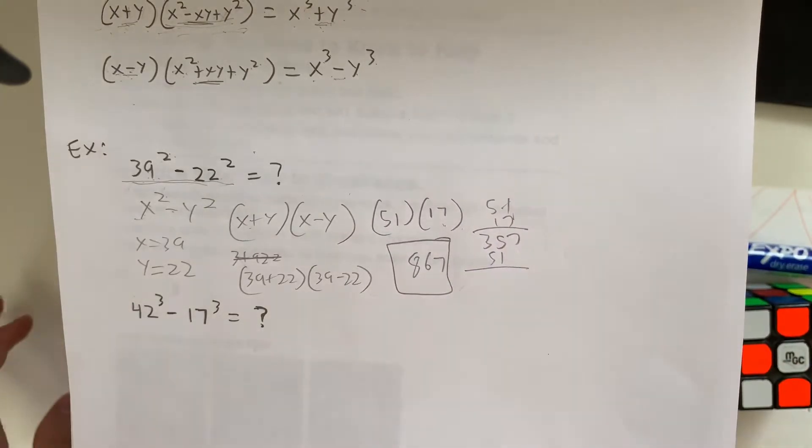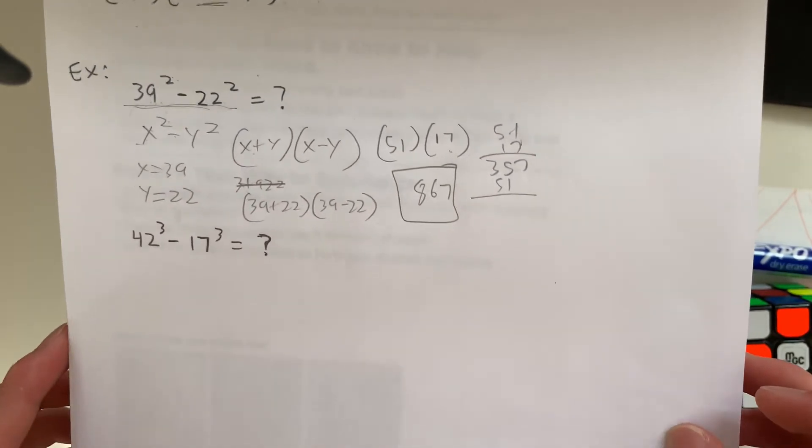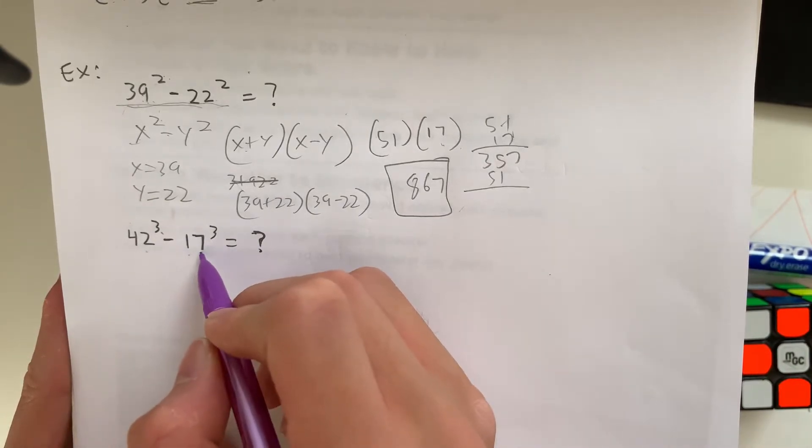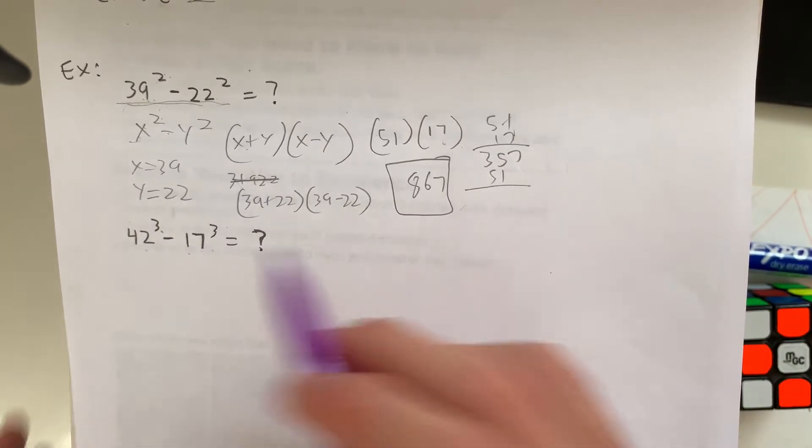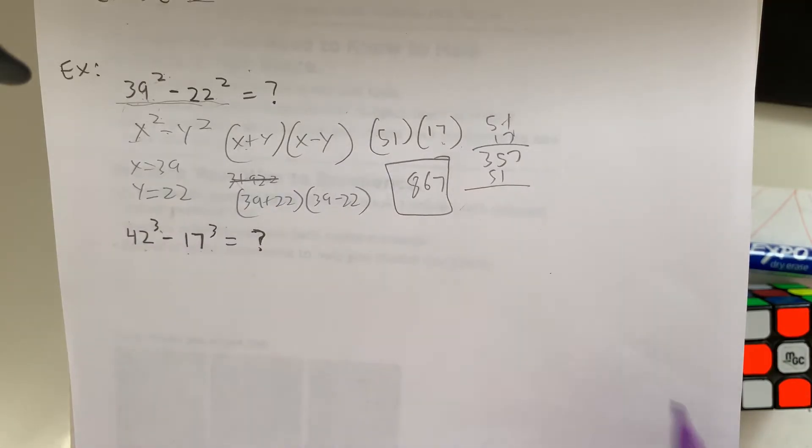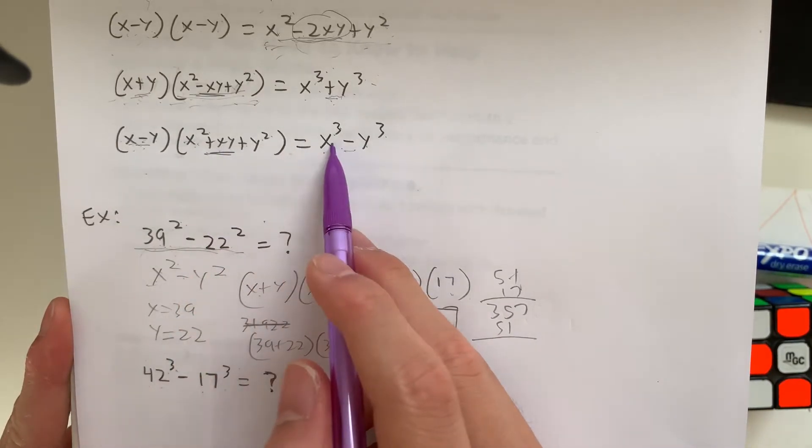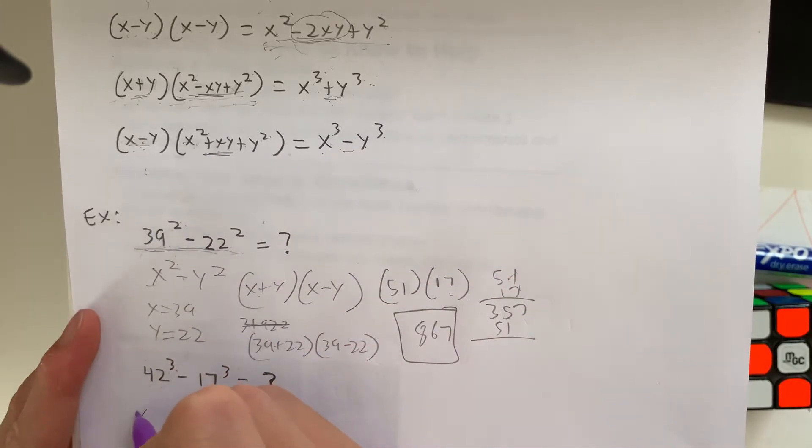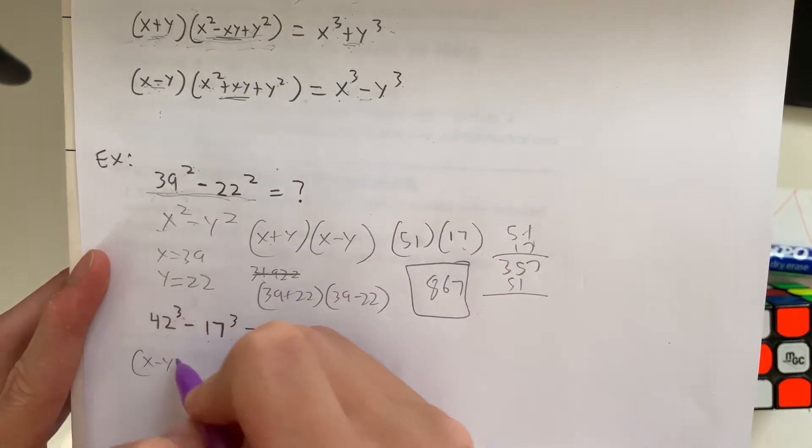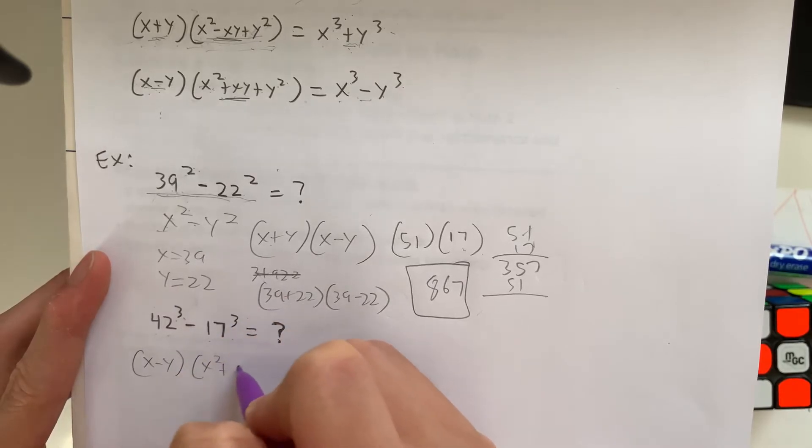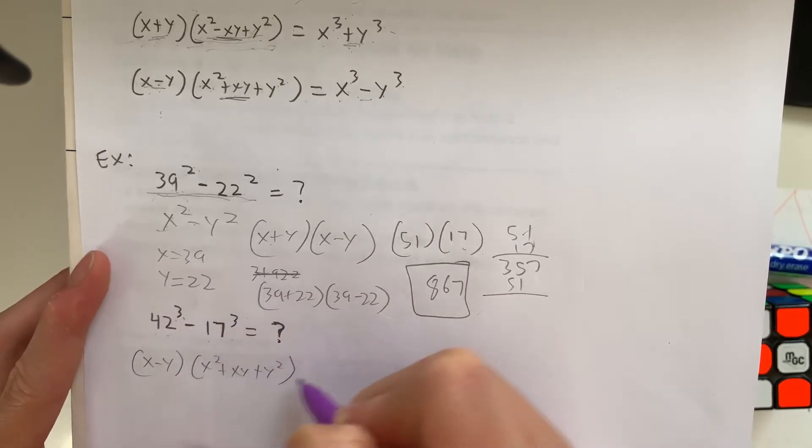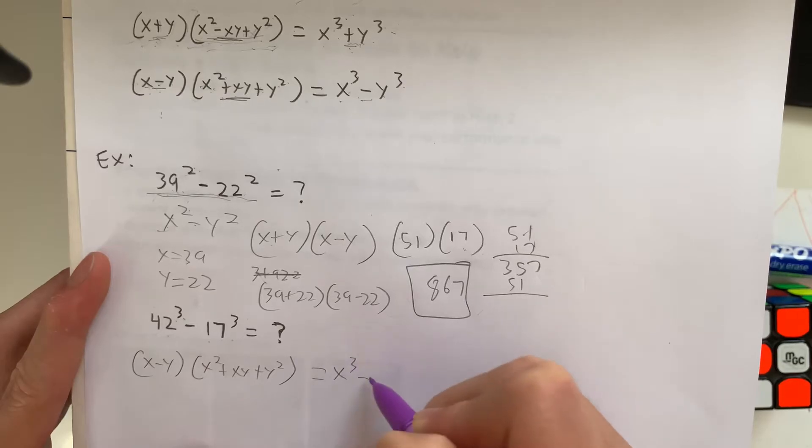So that's one way to do this question. But you could do the other way, which is just multiplying out and subtracting. Next we have 42 to the third power minus 17 cubed. Cubed and to the third power are the same thing. So what is the equation for cubed? As you can see here, it's x minus y times x squared plus xy plus y squared equals x cubed minus y cubed.